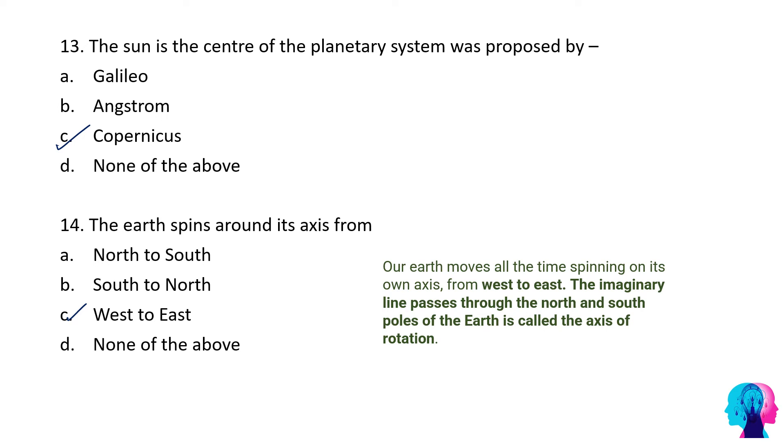The imaginary line that passes through north and the south poles of the earth is called the axis of rotation. You will not tell the axis of rotation that it is from north to south. The question demands that earth spins around its axis from which direction to which direction. So the correct option would be west to east.